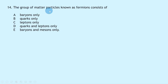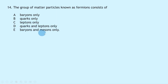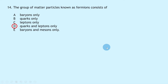Question 14 asks what the group of matter particles known as fermions consists of. From the standard model, fermions consist of quarks and leptons only — those fundamental particles. The answer is D.